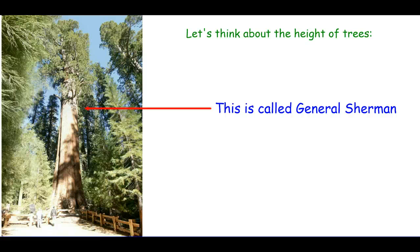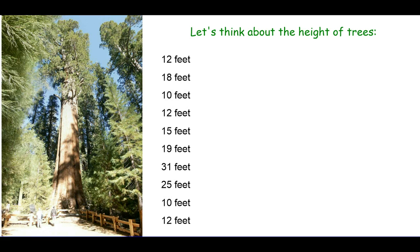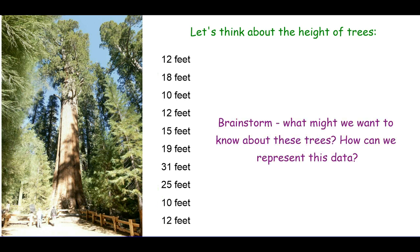We're going to look at easier numbers to go through the concepts. Let's say you've gone to your backyard or a park and found some trees, measured their heights fairly accurately — these are the heights of trees you've found. The first question is: what might we want to know? How can we represent this data? Pause the video, jot down a few ideas, and then come back.